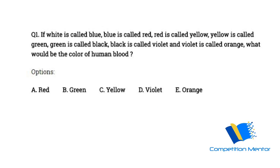So this is question number one. If white is called blue, blue is called red, red is called yellow, yellow is called green, green is called black, black is called violet and violet is called orange. What would be the color of human blood?